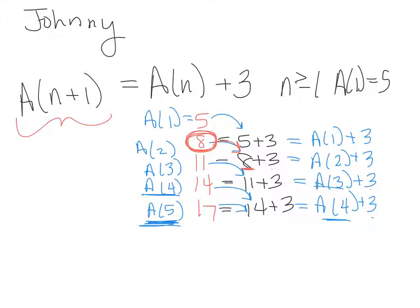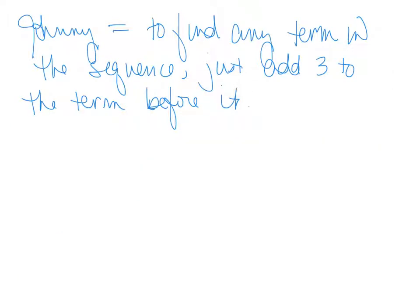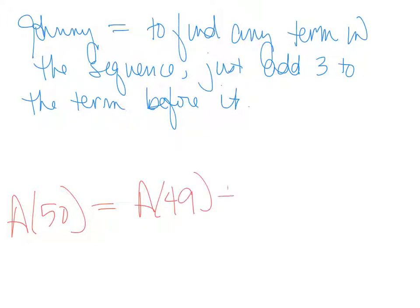Johnny's formula is saying: to find any term in the sequence, just add 3 to the term before it. If I want to find the 50th term, I would take the 49th term and add 3. It's critical that the value for the very first term be specified — we said a of 1 equals 5 — because we need a starting point.